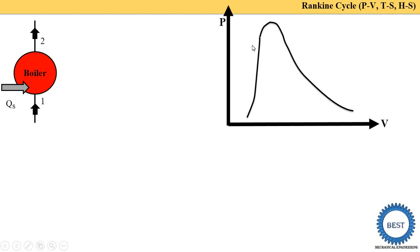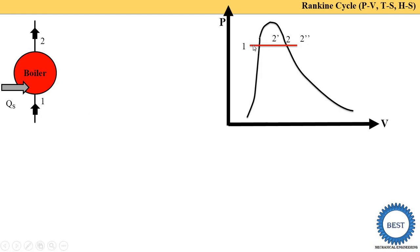Point number one is at the inlet of the boiler, where the state is water (liquid), so point one is on the left side of the saturation curve. The pressure at the boiler inlet is high because water comes from the pump where pressure is increased. We draw a horizontal line because pressure remains constant, and the line moves towards the steam side.